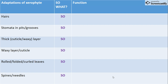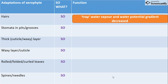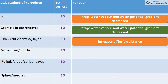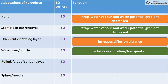Now we'll look at a table - get yourself a pen and paper. One of the adaptations is hairs. They are important because they will trap water vapor, so the water potential gradient will decrease. Stomata in pits - again, they trap water vapor and the water potential gradient decreases. They have a thick waxy layer, which increases diffusion distance - on the upper layer we've got this thick cuticle, so that's an even further diffusion distance. Waxy cuticle reduces evaporation and transpiration. Remember: just saying it reduces water loss is not good enough - say it reduces water loss through evaporation or transpiration.